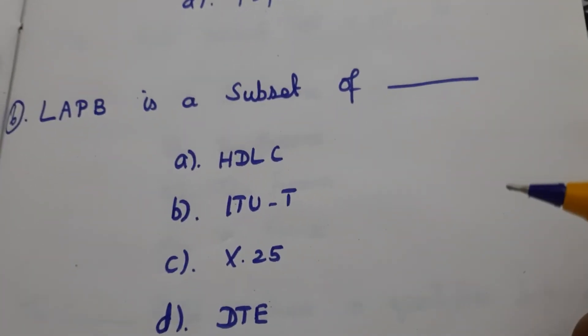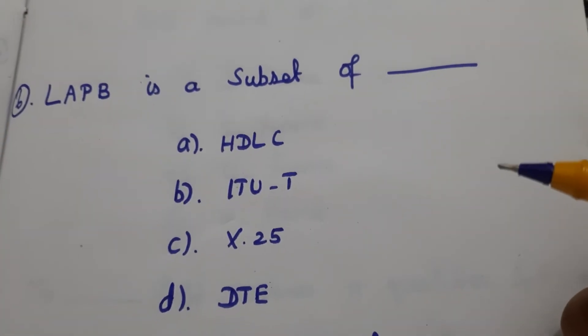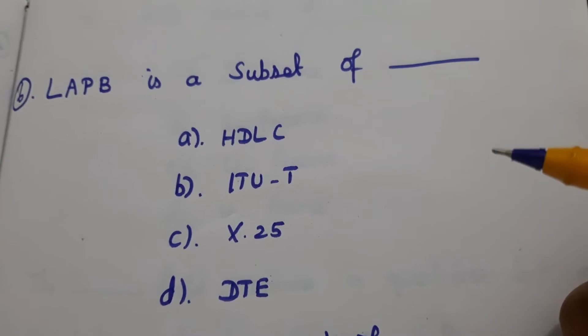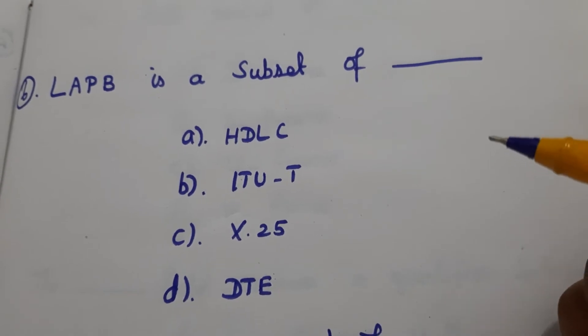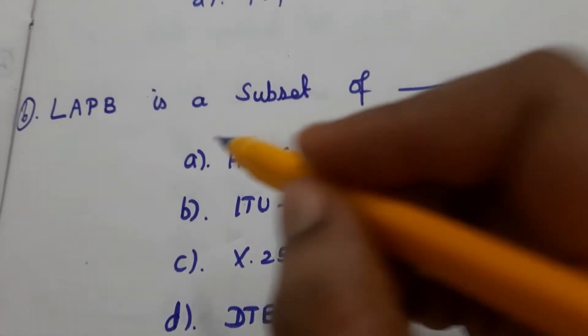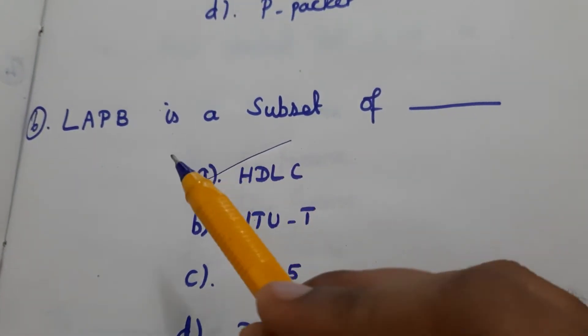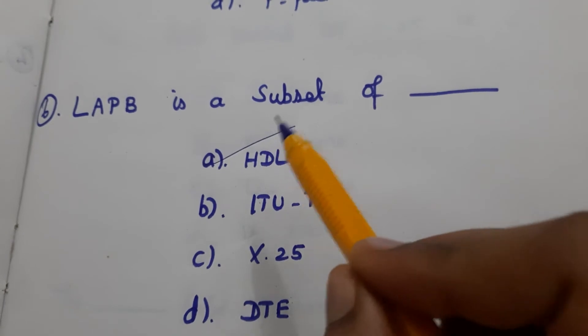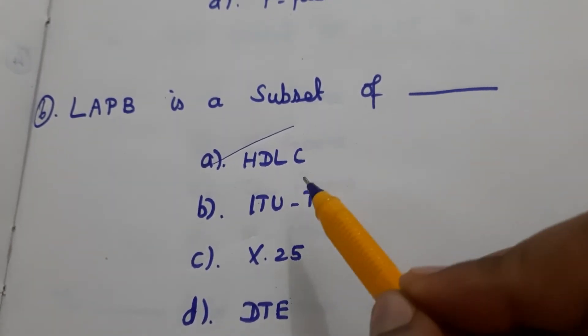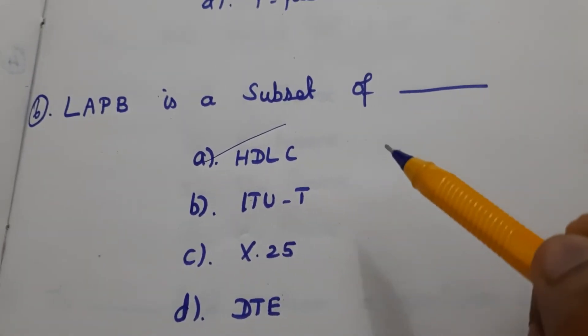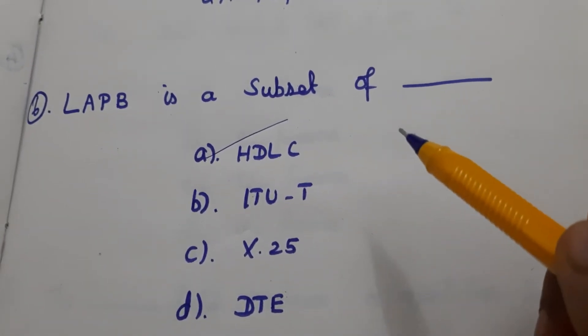Next question: LAPB (Link Access Procedure Balanced) is a subset of HDLC.